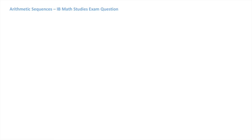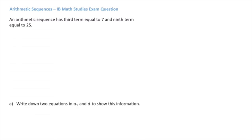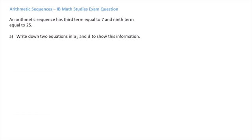In this video we learn how to solve a typical IB Math Studies exam question involving arithmetic sequences. We're told that an arithmetic sequence has third term equal to 7 and ninth term equal to 25. We're asked first to write down two equations in u1 and d to show this information, and then to find the values of u1 and d.